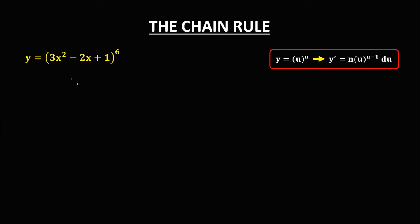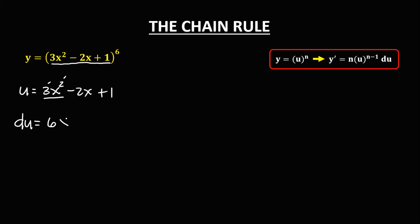For the second given, u equals 3x squared minus 2x plus 1. To find the derivative of u: the derivative of 3x squared gives 2 times 3 equals 6, with exponent 2 minus 1 equals 1, so 6x. Minus the derivative of 2x, which is 2. The derivative of the constant is 0. So the derivative of u is 6x minus 2.